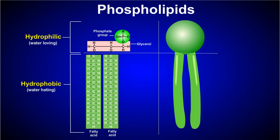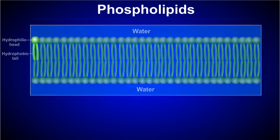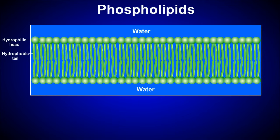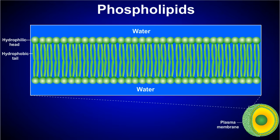Because of these unique properties, phospholipids tend to arrange themselves so that only the hydrophilic heads interact with the watery environment, and the hydrophobic tails crowd inward away from the water. This structure is the major component of plasma membranes of the cell.